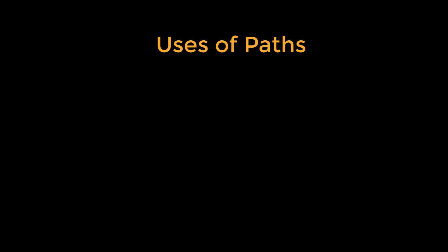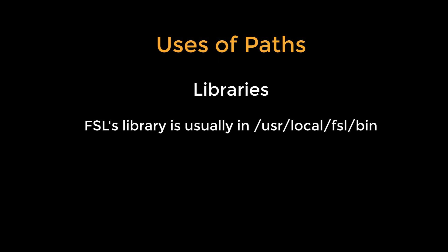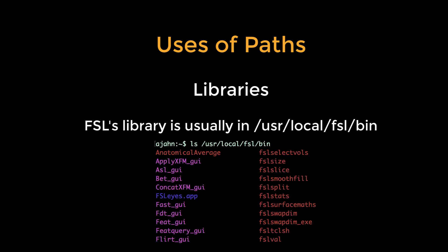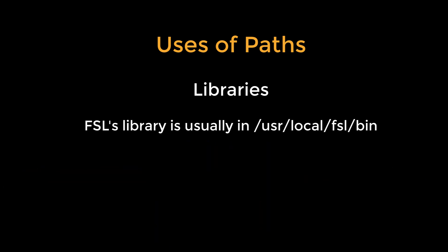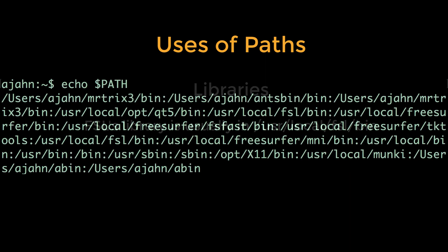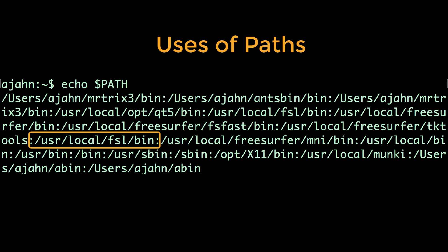Paths allow you to use FSL commands from anywhere in the terminal. FSL, like all other software packages, has a library or directory that contains all of the functions needed to run FSL, such as fslinfo, fslmaths, flirt, and so on. To run those commands, we would need to either be in that directory or specify the absolute path to the command we want to run. To give us the flexibility to run FSL commands anywhere, we'll set the path variable to indicate where the FSL library is.